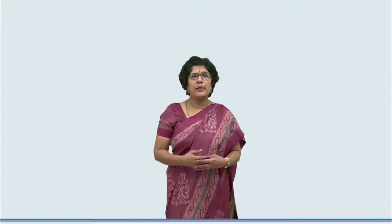Similarly, we shall see another example — a correlational study, where the researcher is trying to see whether two variables are related to one another. The title of the research is: 'Study of the correlation between the adjustment abilities and the school achievement of the students.' The adjustment abilities and school achievement are the two variables under study, and the researcher is trying to see whether there is any correlation between the two. Let us see how the objectives are stated in a study where correlation is the focus.